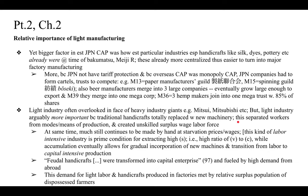At the same time, much continued to be made by hand at starvation prices and wages — this labor-intensive industry was the prime condition for extracting high surplus value, meaning a high ratio of variable to constant capital. Accumulation eventually allowed gradual incorporation of new machines and transition from labor to capital-intensive production. As Noro says, feudal handicrafts were transformed into capitalist enterprises, fueled by high demand from abroad for products such as silk and cotton.